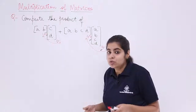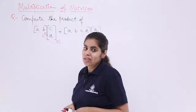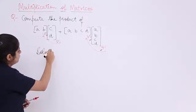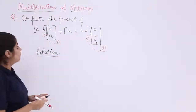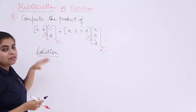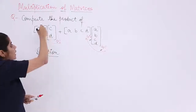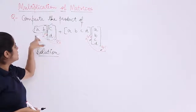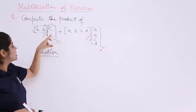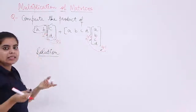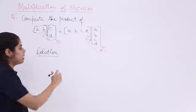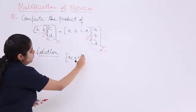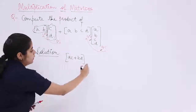Now that we know the whole setup, let's start with the solution. For the first product, we do first row times first column, which gives us A×C plus B×D. That is AC + BD — a 1×1 matrix.